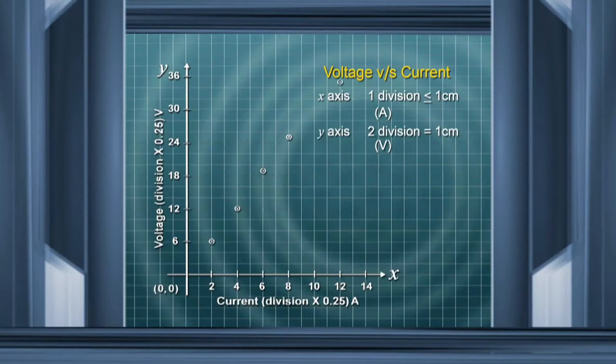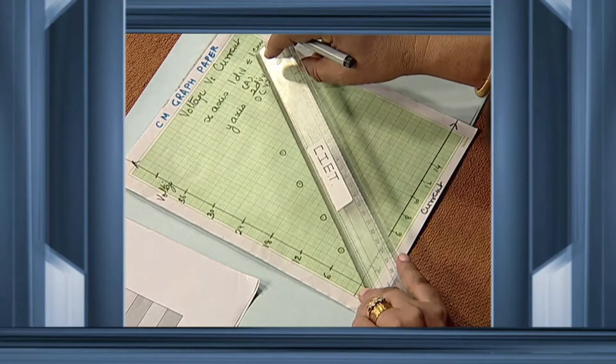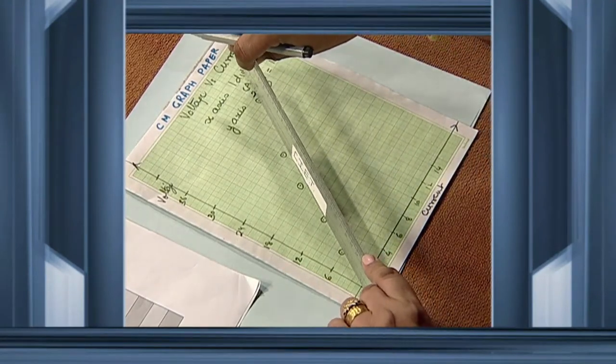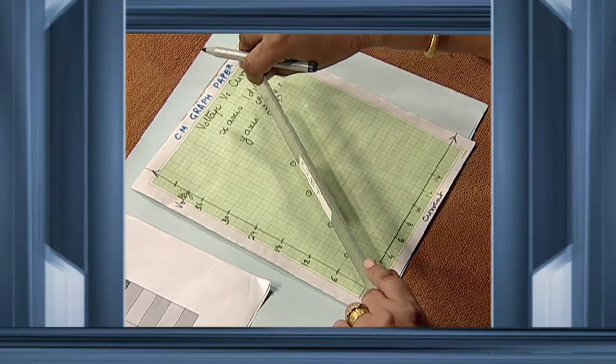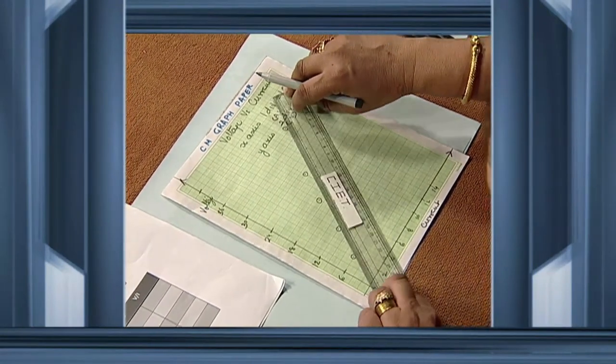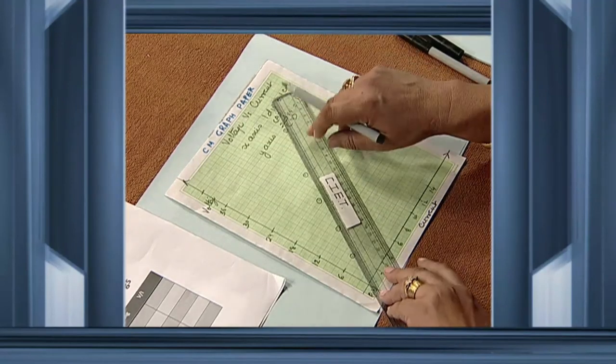Now we have to draw a line for all these points. Remember, all the points should not be connected — it is not necessary that all of them lie on the same line. What we need to do is draw a mean line. The origin (0, 0) is a must and should be included. Using a plastic scale, we draw a line such that points lie on either side — a mean or average line. The advantage is that you do not have to calculate for each value and then average it; just plot a mean line.